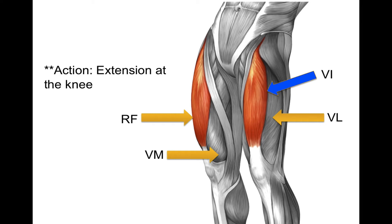Altogether, these muscles — their purpose, their action, their function — is to extend at the knee. So when we're climbing stairs, running, jogging, playing sports, we have extension and flexion. In this case, we're basically making the knees straight, the legs straight, overall the lower limbs straight. That's the action of these muscles.